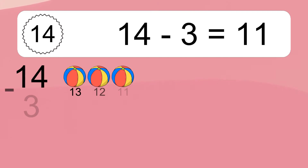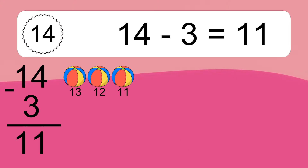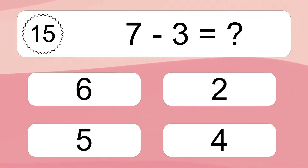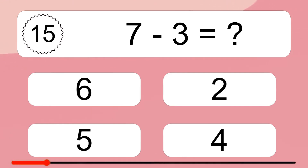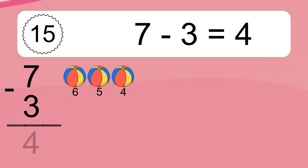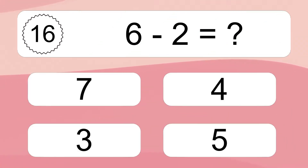14 minus 3 equals 11. Let's count it: 13, 12, 11. 7 minus 3 equals what? 7 minus 3 equals 4. Let's count it: 6, 5, 4.